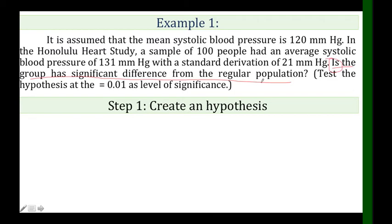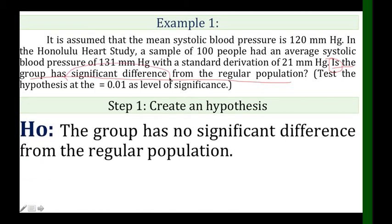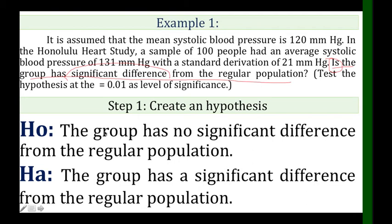Now determine whether the statement is an alternative hypothesis or null hypothesis. Since the clue is 'has significant difference,' it is an alternative hypothesis (Ha). For the null hypothesis (Ho), the statement becomes: 'The group has no significant difference from the regular population.' The Ha contains a difference, and the Ho contains no difference.